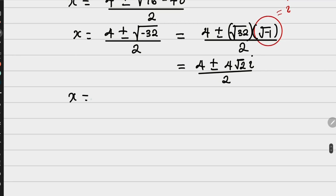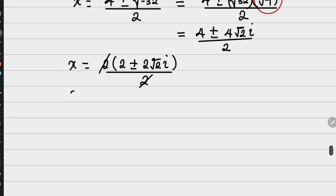So my x will now be equals to, I can factorize just 2 out so that I can cancel the 2 at the denominator. This is 2 plus minus 2 root 2 i all over 2. So this cancels out. So we have our x to be equals to 2 plus minus 2 root 2 i. Now in this case, we can say that x is either 2 plus 2 root 2 i, or x is equals to 2 minus 2 root 2 i.